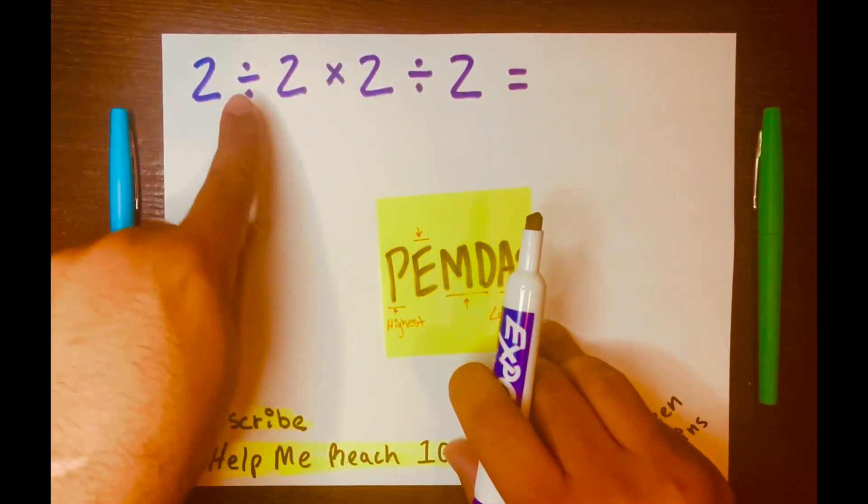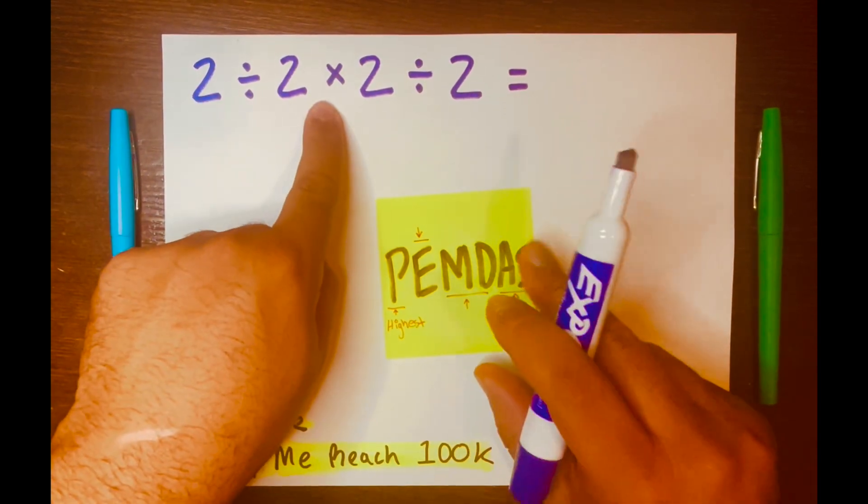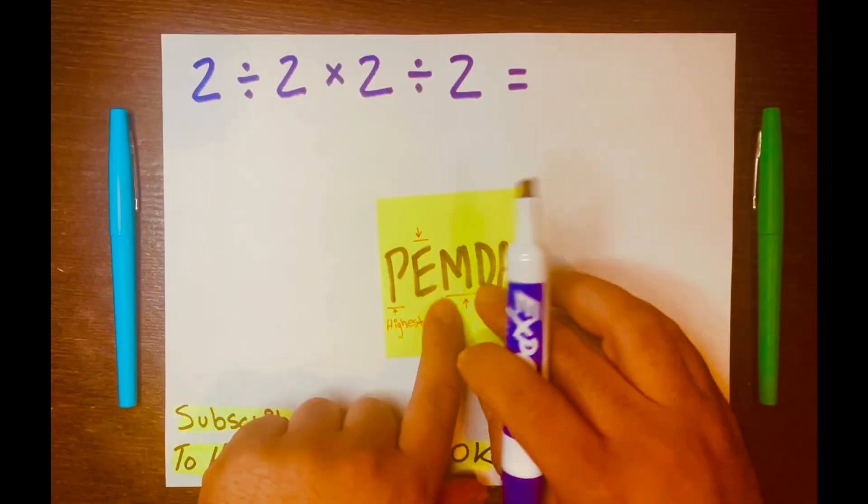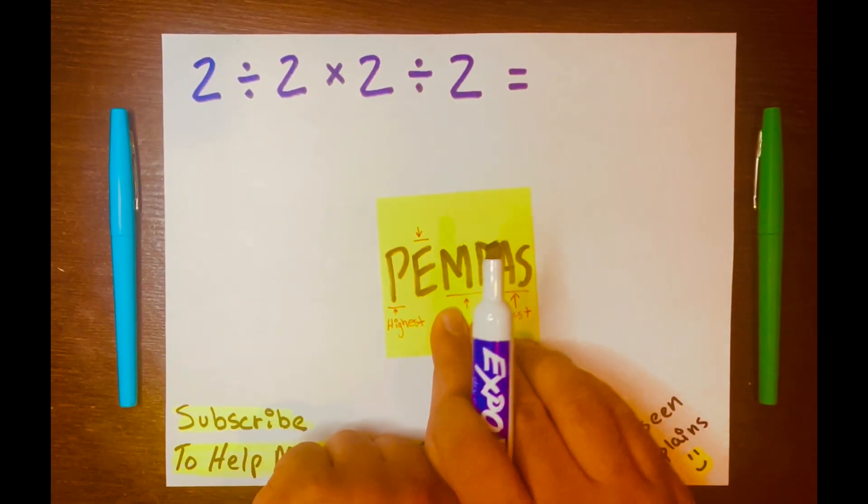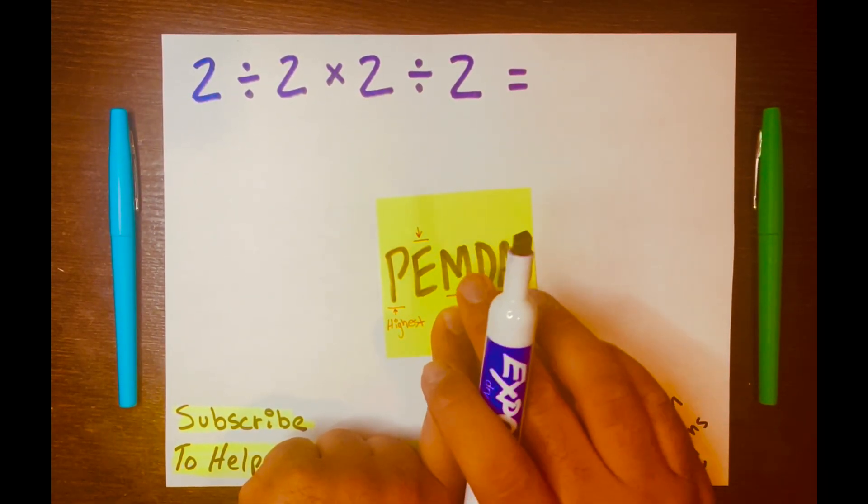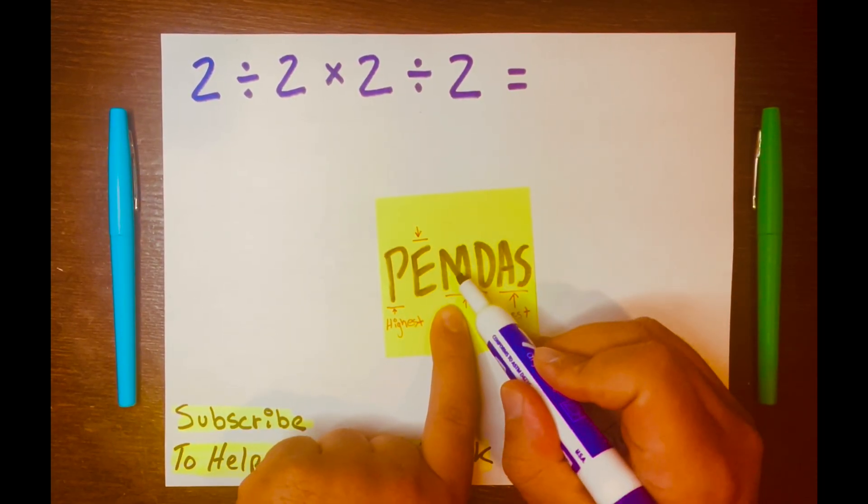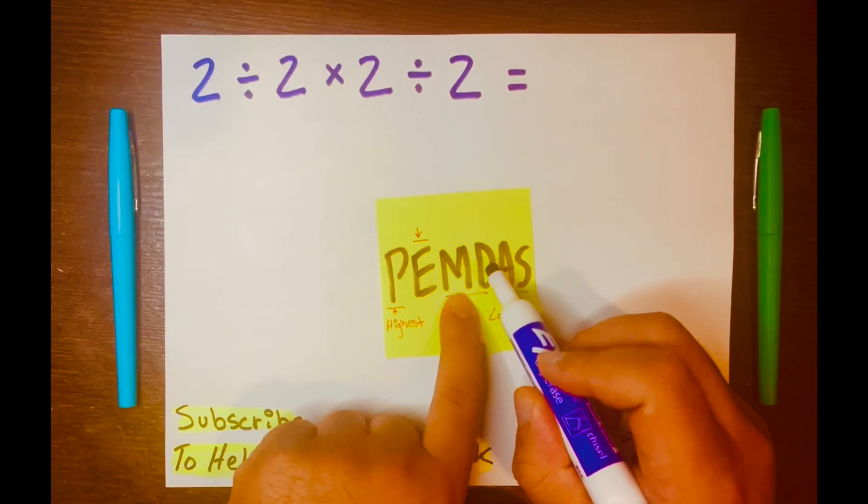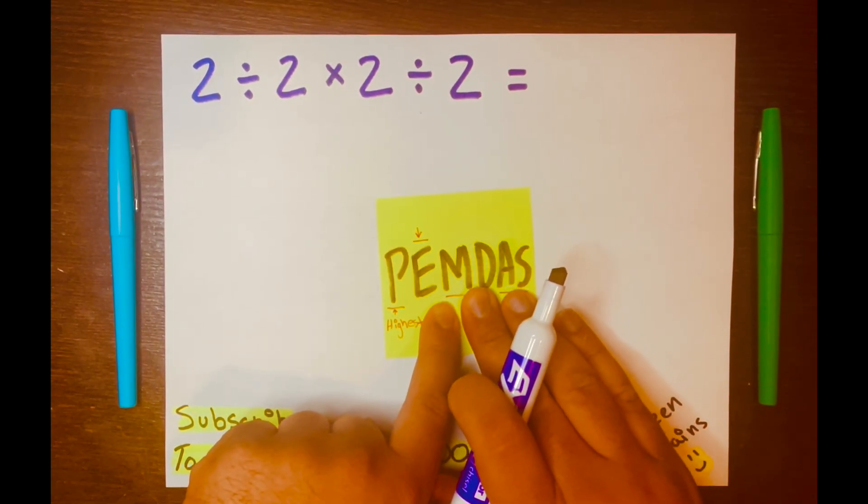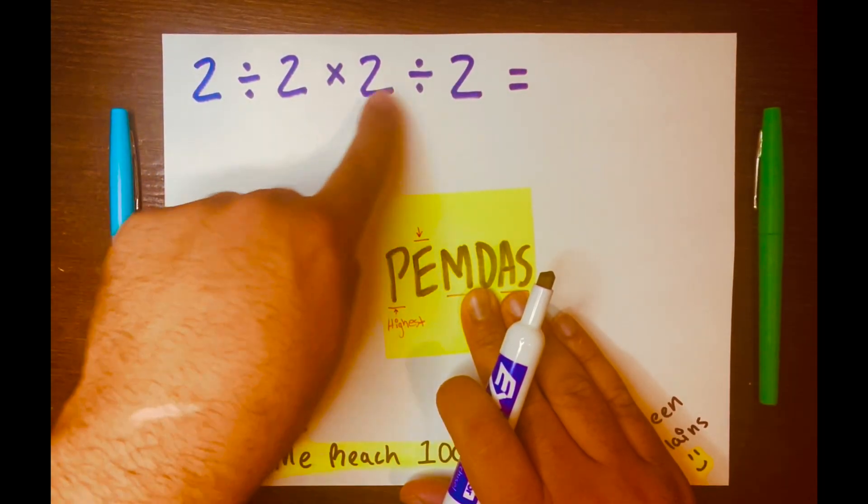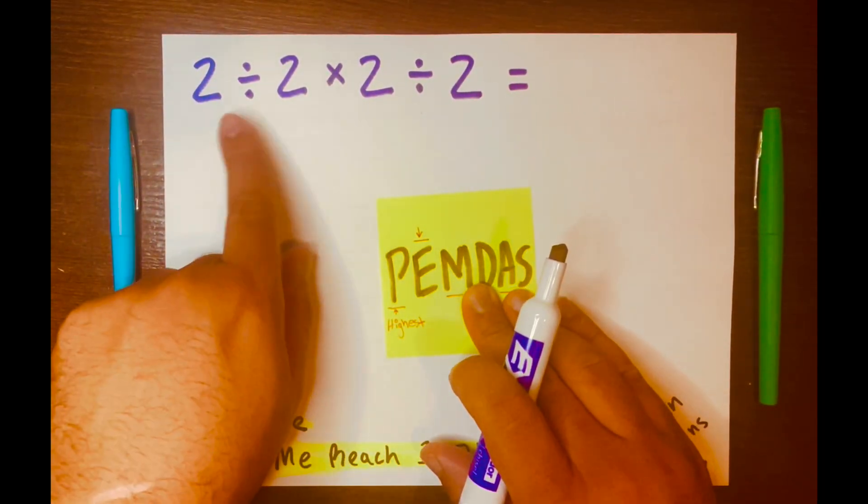And looking at this math problem, we see division and multiplication, and both operations are within its level. So another thing is, when working with PEMDAS, that you read from left to right. So you start with what's left first and then work yourself to the right.